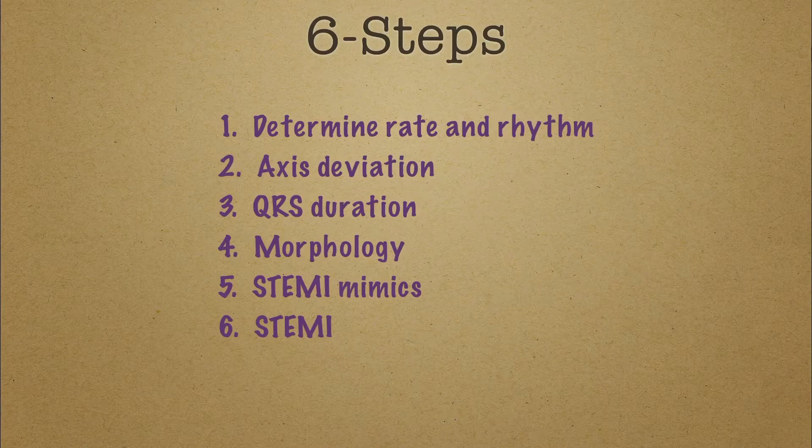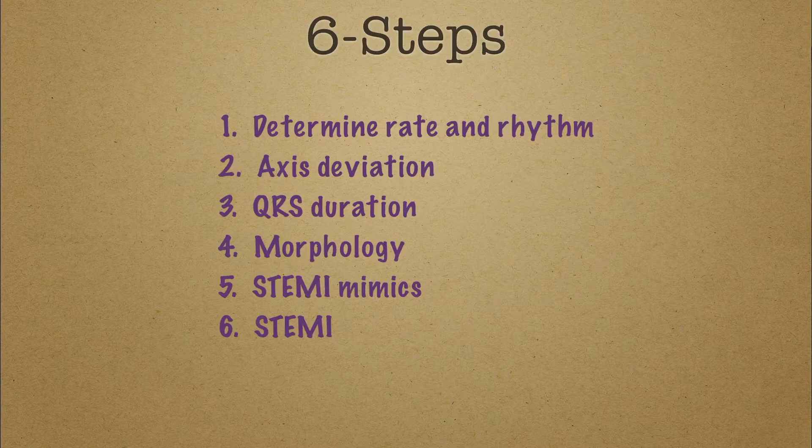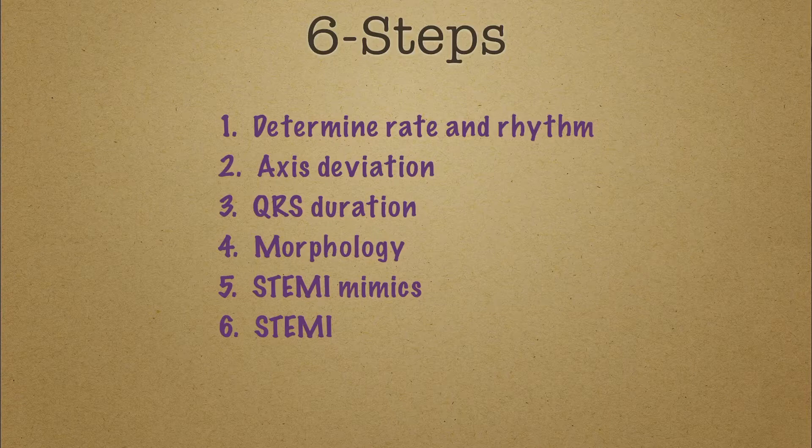So there's six steps that I use whenever I'm looking at a 12-lead. The first thing is we have to figure out rate and rhythm, axis deviation, then we go on to do I have a long QRS, QT segment? Then just how does the complex look? Do I have anything that may make me think I have something that looks like a STEMI but isn't really a STEMI? And then ultimately we get to see if there's a STEMI.